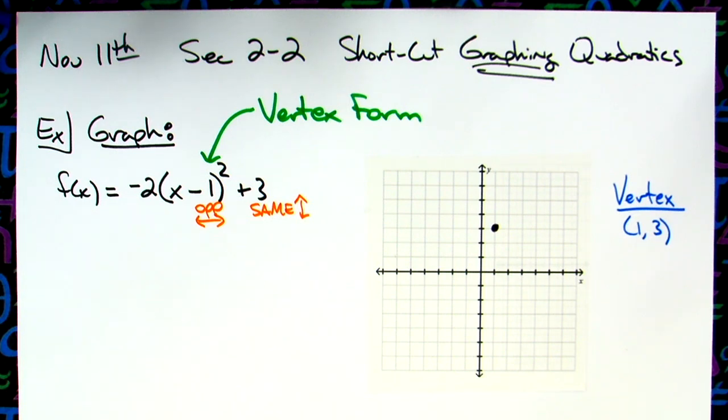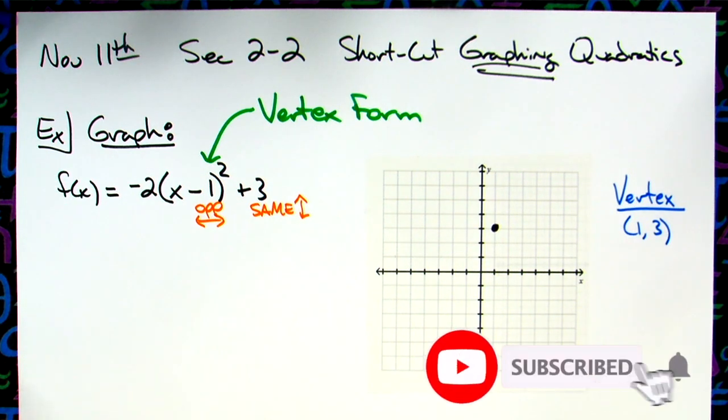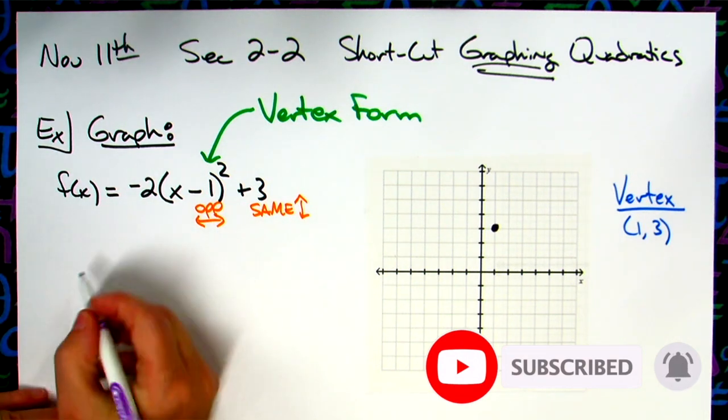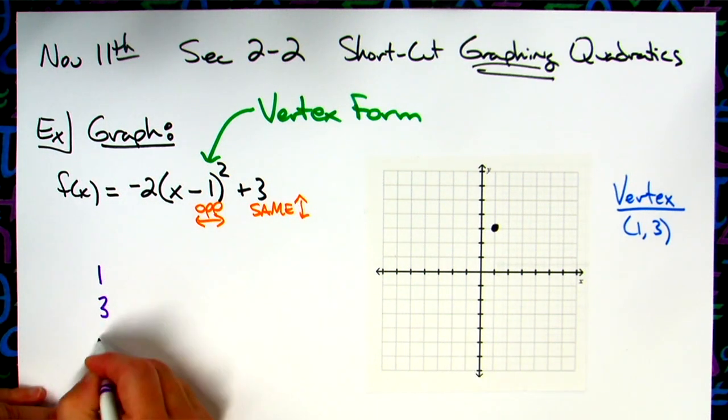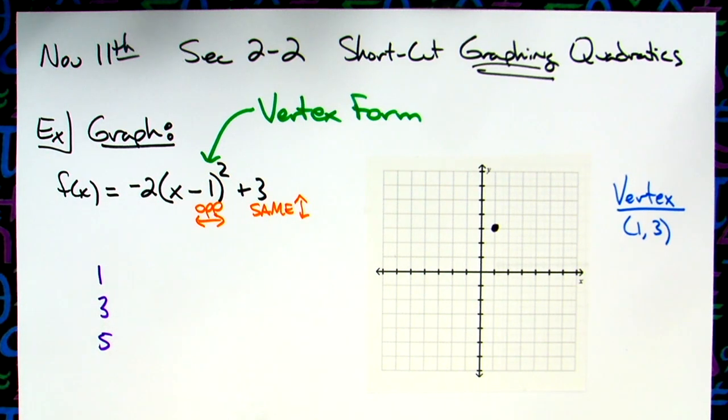Now from there, what we're going to do is we're going to learn the shortcut. Okay, so there are three magic numbers that we're going to use for our shortcut. And it's the same three magic numbers every time. We're going to use one, three, five. And if I wanted, I could keep going, if my graph paper was big enough, I could do seven, nine, eleven. One, three, five is going to work.